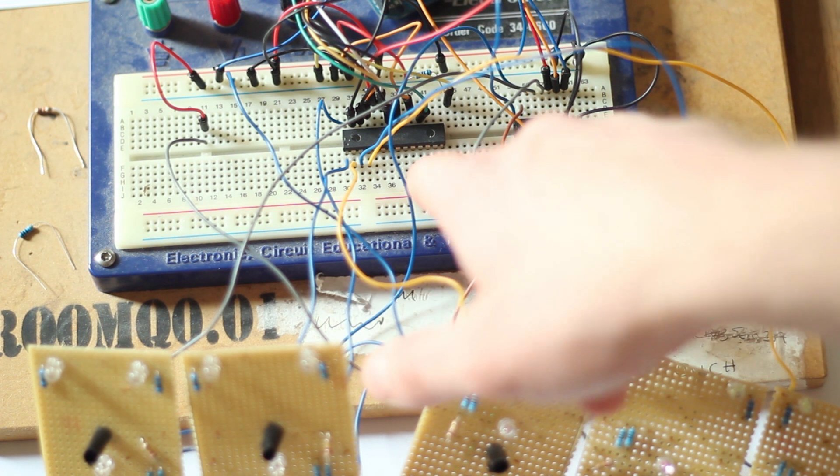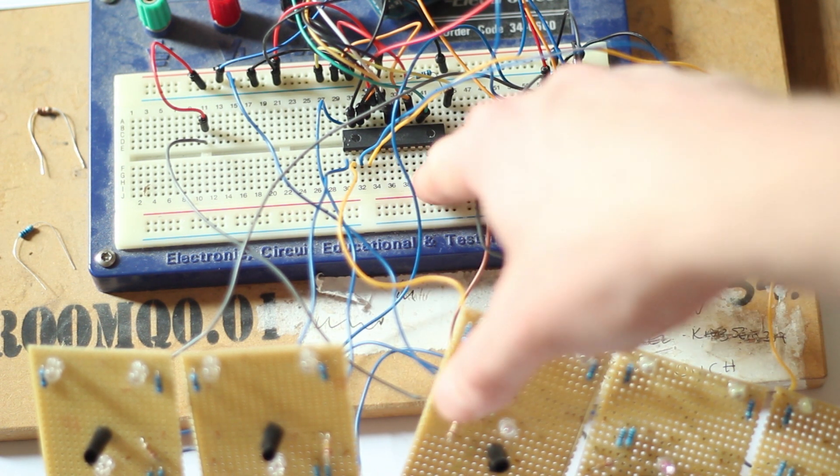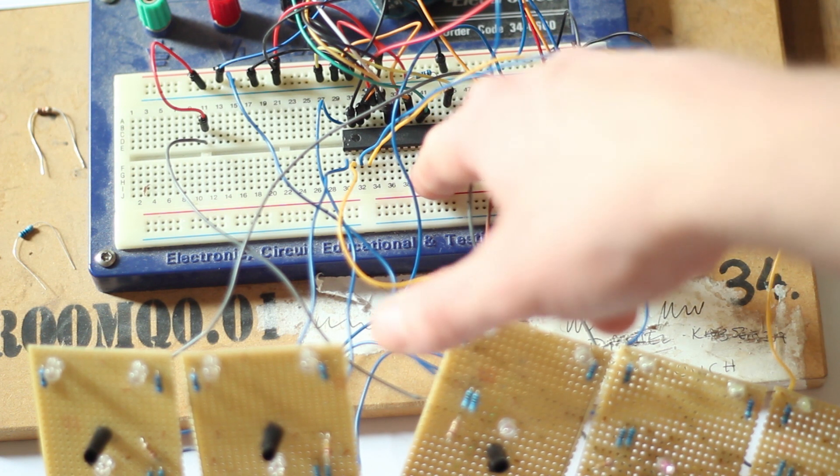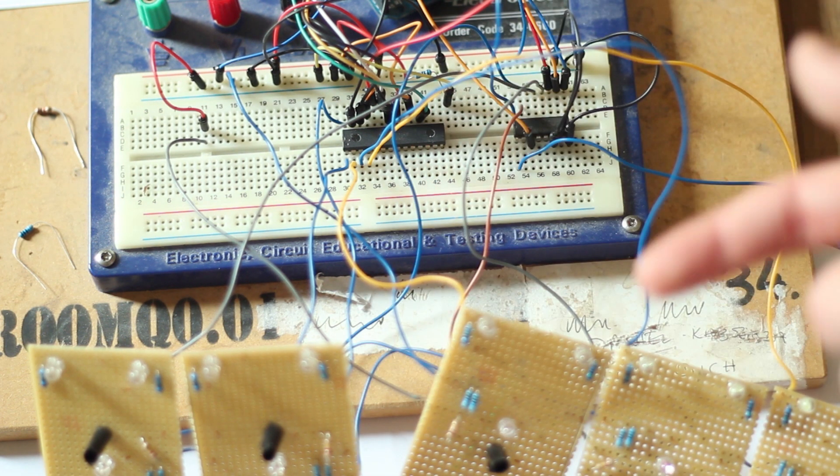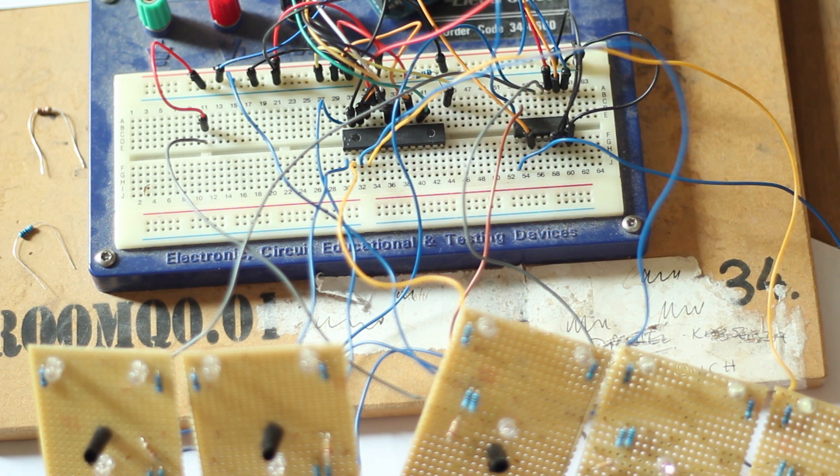But this chip here is the TLC5940 which is a 16 channel PWM driver. It will go from levels of zero to 4096, which is a lot more than the Arduino will kick out in terms of PWM.